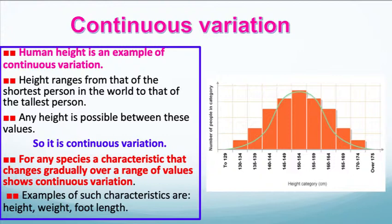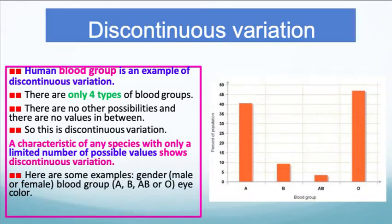For any species, a characteristic that changes gradually over a range of values shows continuous variation — examples include height, weight, foot length, and the size of a bird's beak. On the other hand, discontinuous variation, like human blood groups, has only four types with no other possibilities and no values in between them. A characteristic of any species with only a limited number of possible values shows discontinuous variation — examples would be male or female, or blood group A, B, AB, or O.